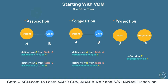The primary reason for using association, composition, or projection is to define how two CDS views are related. So if I have a CDS view A and a CDS view B — imagine this is a sales order and this is the sales order item — we define which particular fields they are related on. There will be some key fields; in this case, sales order and item are related with the key field of the sales order document number, which is VBELN.